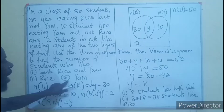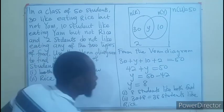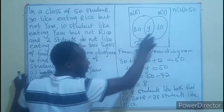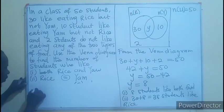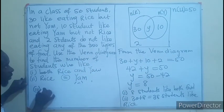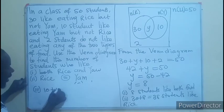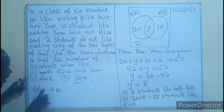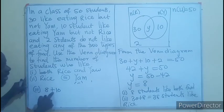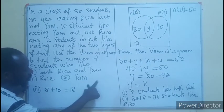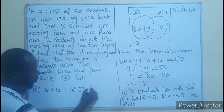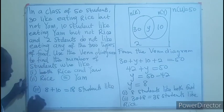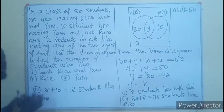The last question here, we are asked to find yam. So, yam is going to be region 2 plus region 3. 10 plus, Y is 8. So, we have 8 plus 10. That will be 18. So, 18 students like yam.